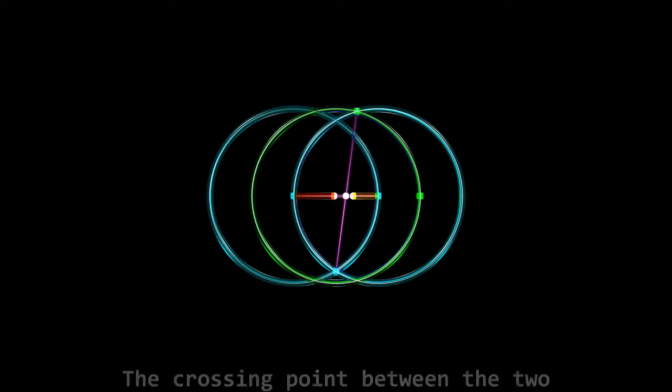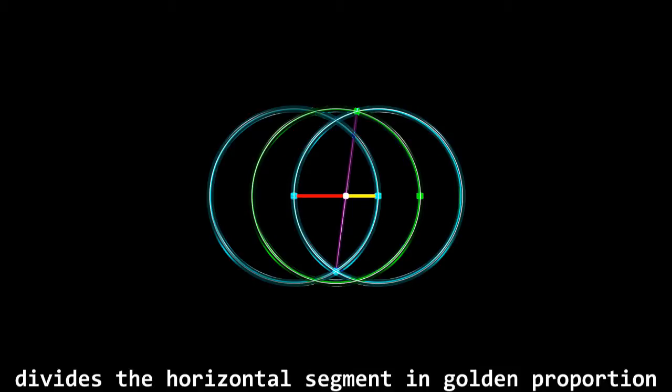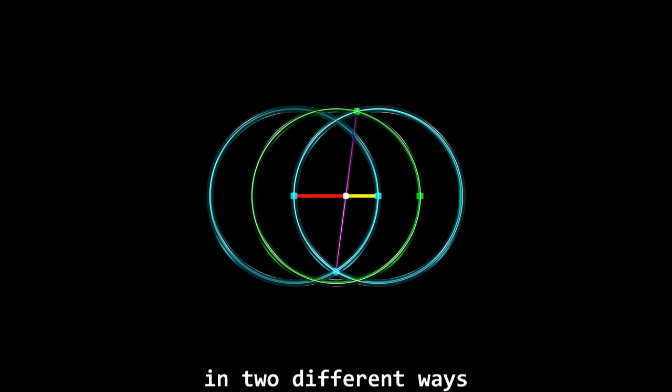The crossing point between the two divides the horizontal segment in golden proportion in two different ways.